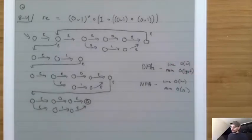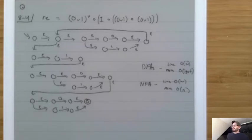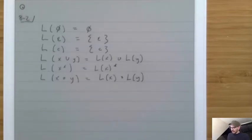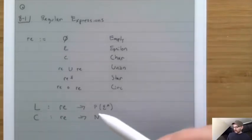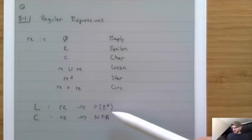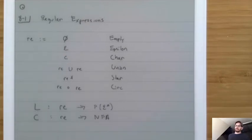So regular expressions allow us to describe regular languages using these six operations. We can convert regular expressions into languages and regular expressions into NFAs. But there are actually a whole lot of other things that we can do with regular expressions if we treat them as abstract objects. Let's spend some time talking about what some of those different options are.